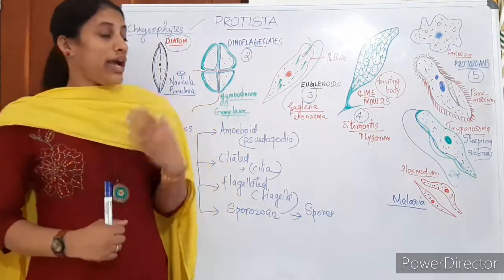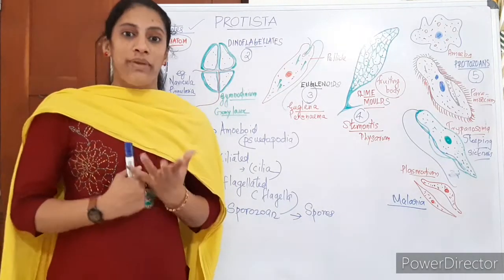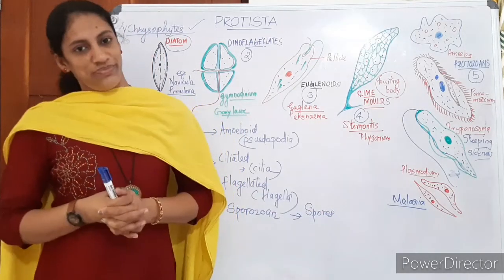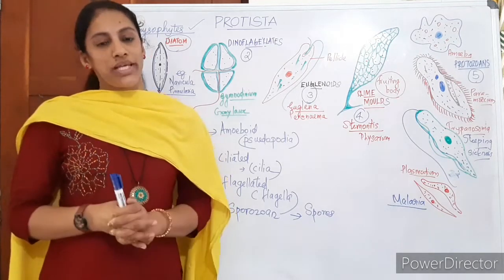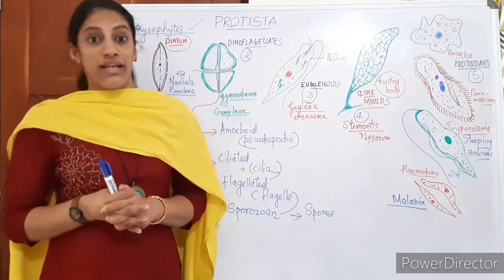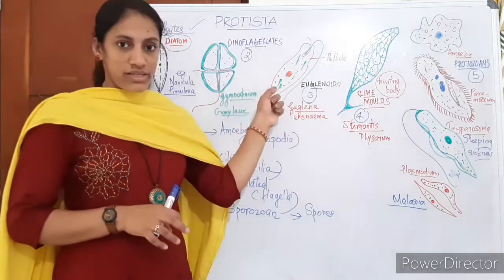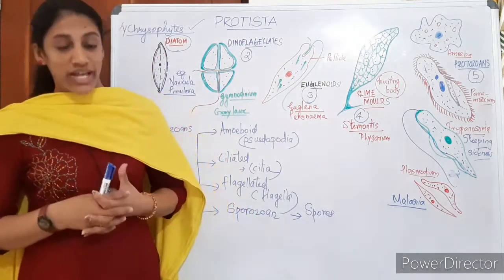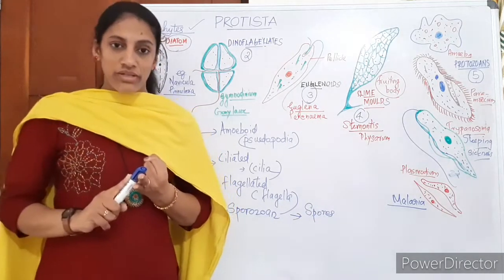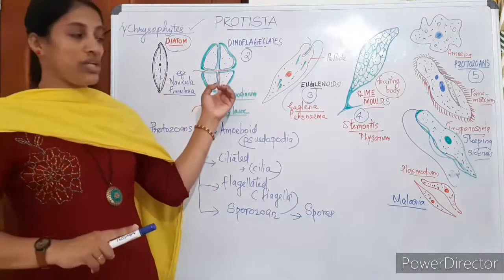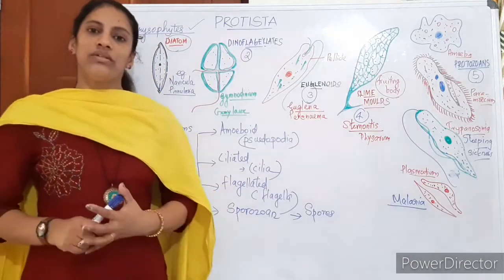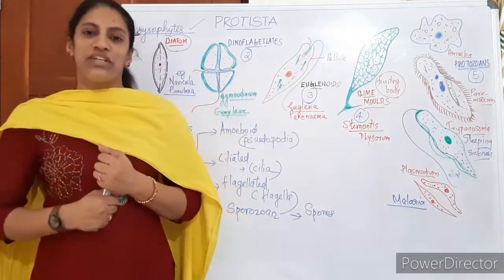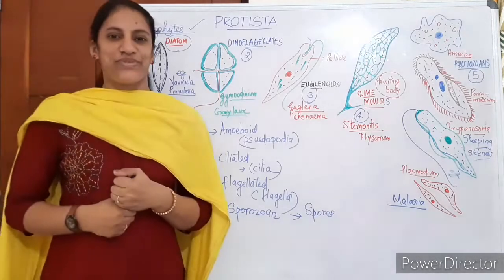That is about Kingdom Protista. We can see different types of members in this kingdom. The unique feature of all of them is that they are all unicellular eukaryotes. There is great variety in their cell walls, locomotory organs, nutrition, and habitats. Study well, and also study the diagrams. Thank you.